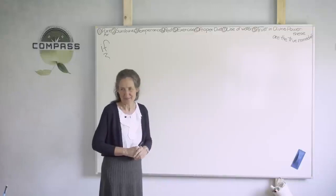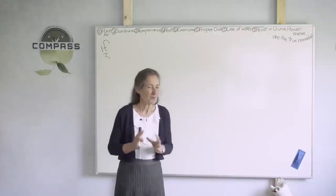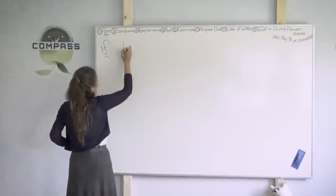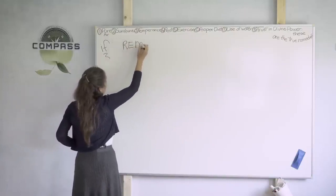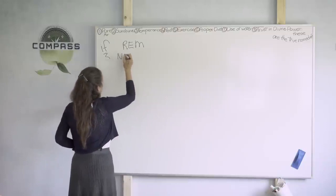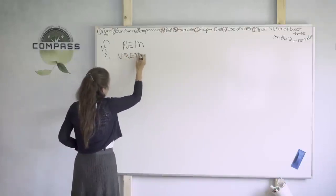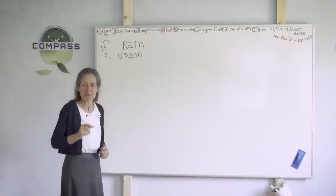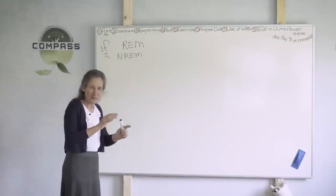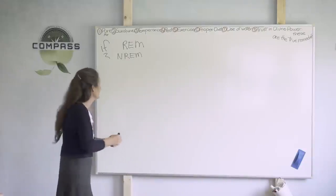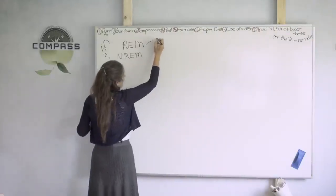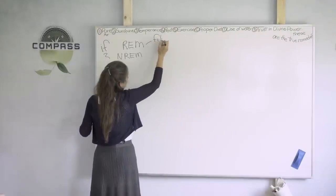Odkrili so, da se to dogaja v ciklih in potem so to premaknili na ljudi. Ena izmed raziskav je bila narejena tudi na dvoletni deklici med tem ko je spala in odkrili so, da je skoraj vse povsem isto. In ta čas, ko se oči hitro premikajo, so poimenovali rapid eye movement, ker se oči hitro premikajo. To bomo imenovali REM faza.